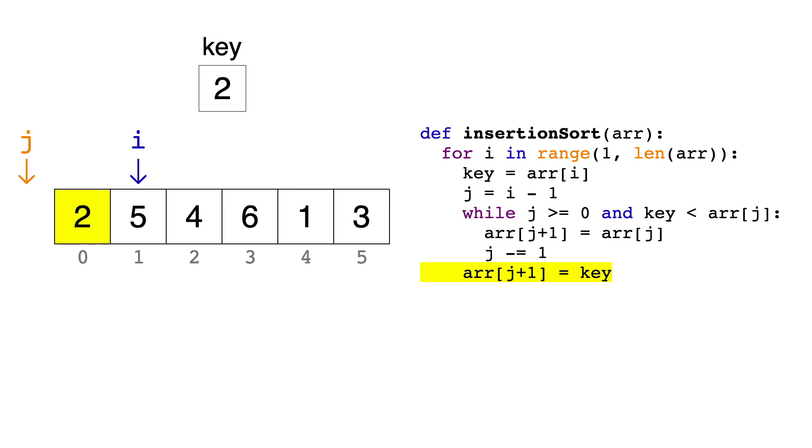The first two items are sorted, and we've moved the 2 to the beginning of the array. Let's move on to the third item in the array, so i equals 2. Key is now 4, and we set our j variable to the 1 before i.